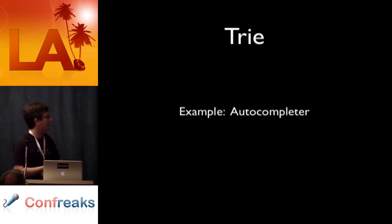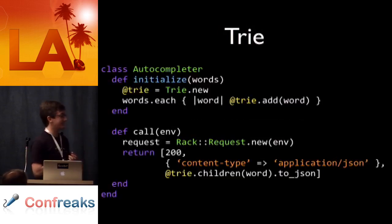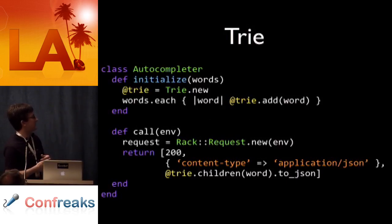So here's an example of where a trie is pretty cool as an autocomplete. Let's say you're going to make a rack-based autocompleter. Well, it turns out that you can do that with most tries in just like that. So you can see there, we have our initialize method, which loads a whole bunch of words into the trie and in our call method to match the rack API. We do a rack request.new on the environment. We get our word, which I apparently forgot to put into a variable. That's cool. And then we return it. So we're just going to return the list of children of a particular prefix to JSON. And that's really it. Tries are pretty cool for that.